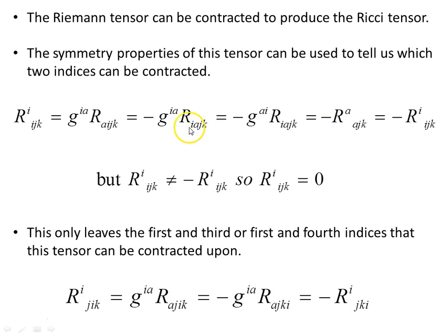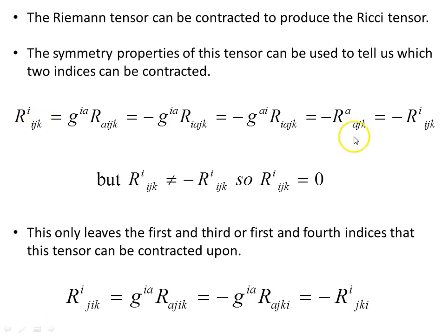We can swap the order of indices to get a negative — swapping A and I produces a negative. Since the metric is symmetric, swapping its indices changes nothing. Summing out the repeated indices leaves negative R_AJAK, and since A is a dummy index we relabel it back to I. We find that R_IIJK is equal to its own negative, which is impossible, so contracting on the first two indices gives zero — R_IIJK equals zero. This leaves only the first-and-third or first-and-fourth index pairs as valid contractions.